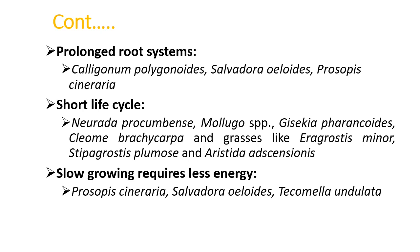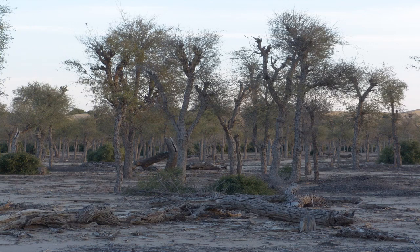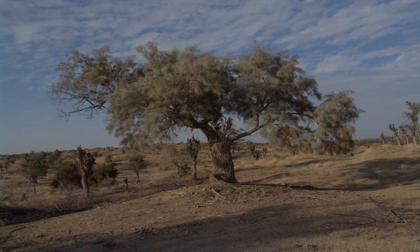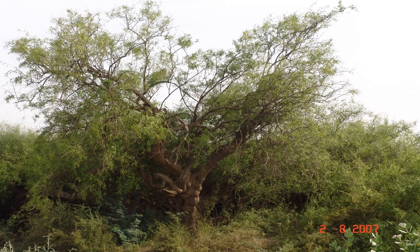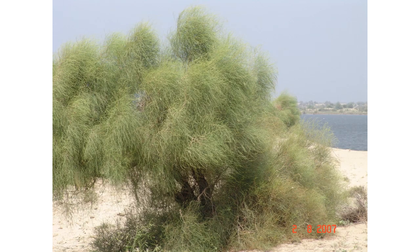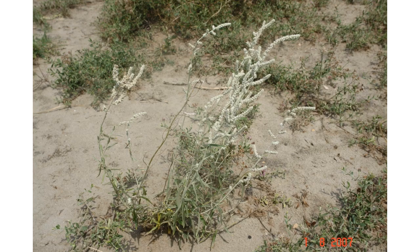The first species shown is Prosopis cineraria, also known as 'churn' in Sindhi, 'kandi' in Sindhi, and 'frosh', 'khagal', or 'jand' in Punjabi local language. This is Salvadora oleoides, known as 'wan' in Punjab, but also known in Balochi and as 'pilu' in Sindhi language.